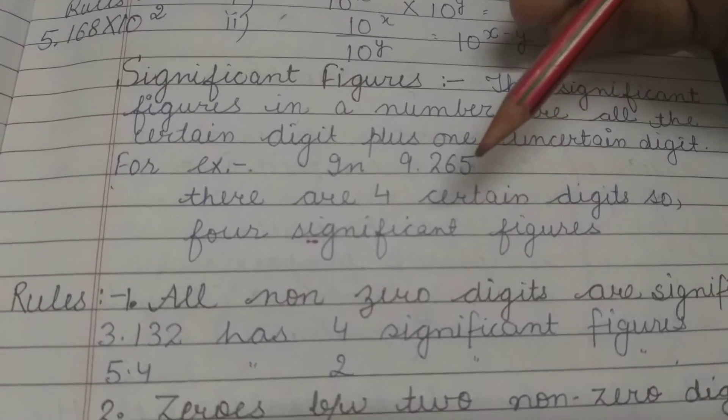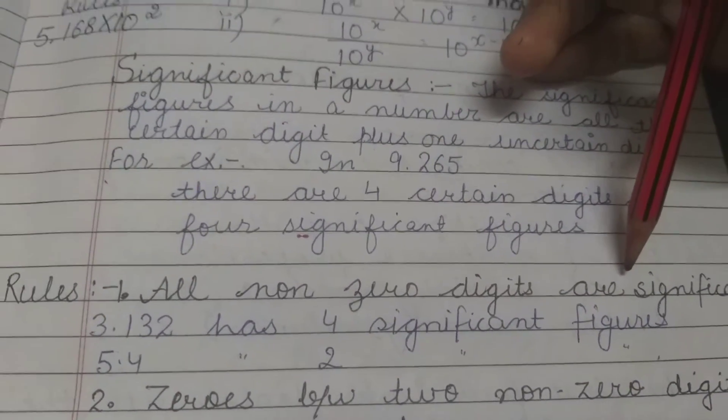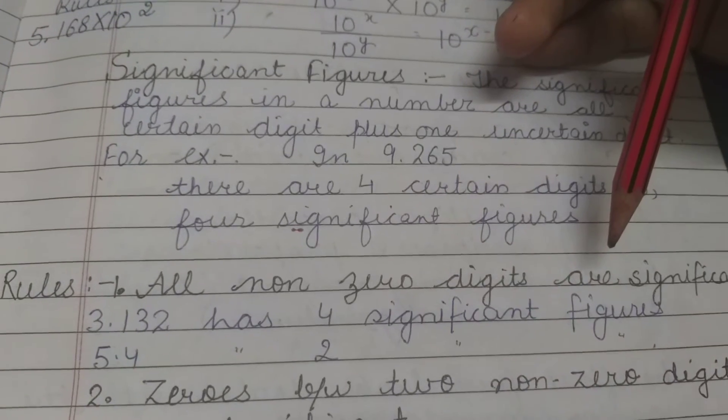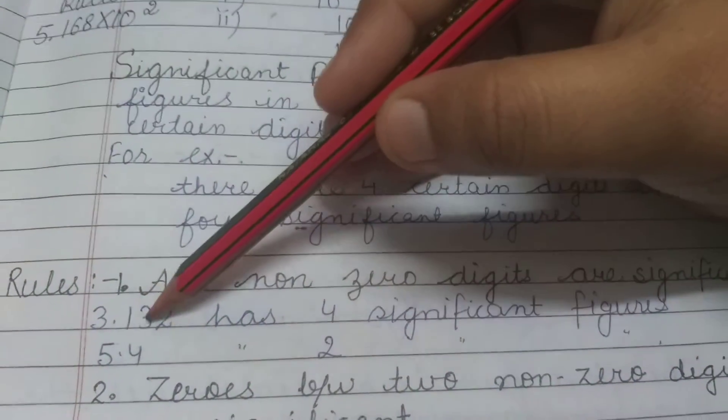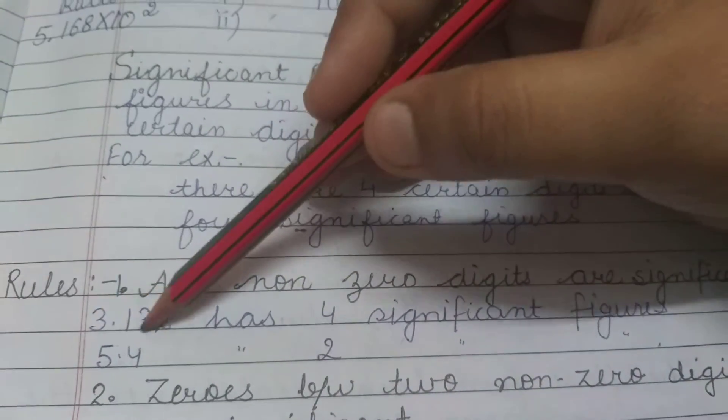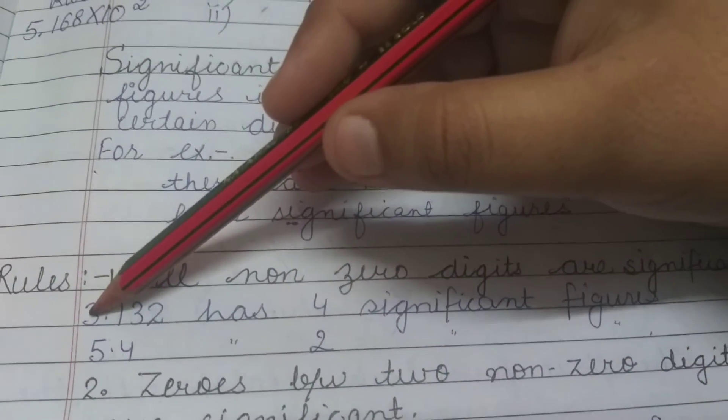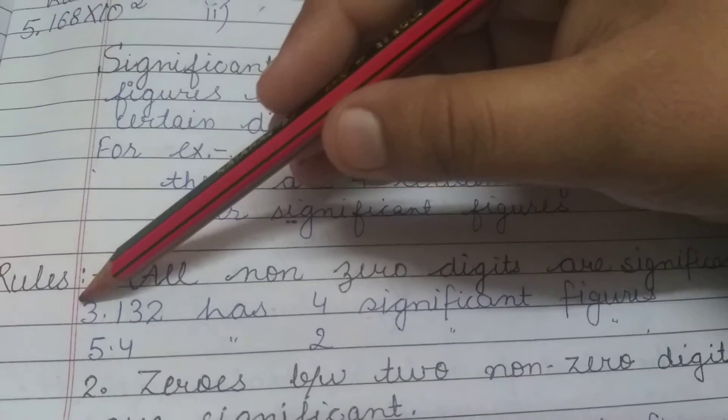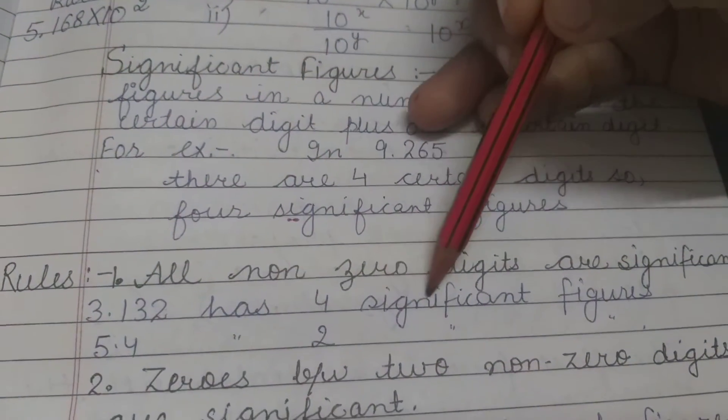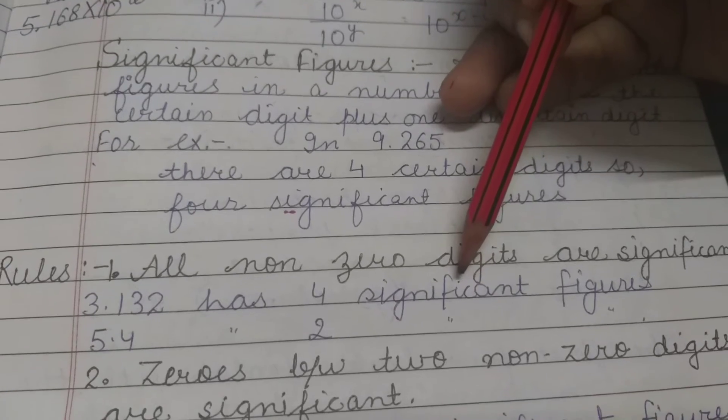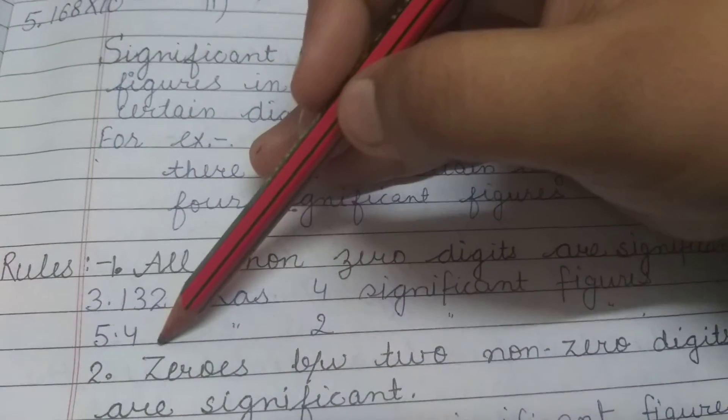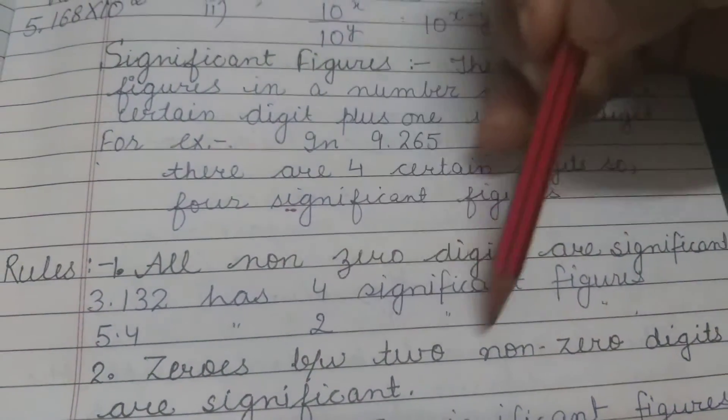All nonzero digits are significant. For example, 3132 or 3.132—all digits are nonzero, so all are significant figures. In 5.4, there are two digits, so two significant figures.